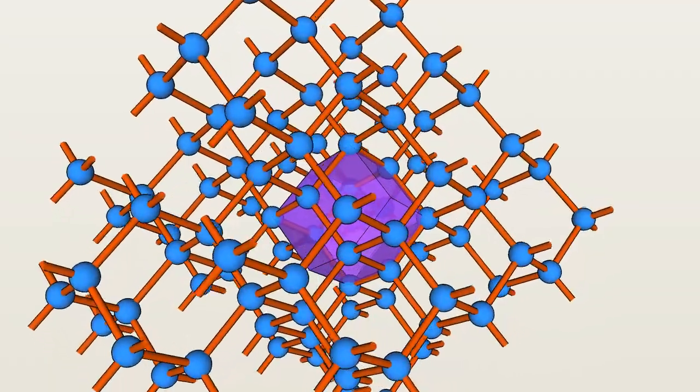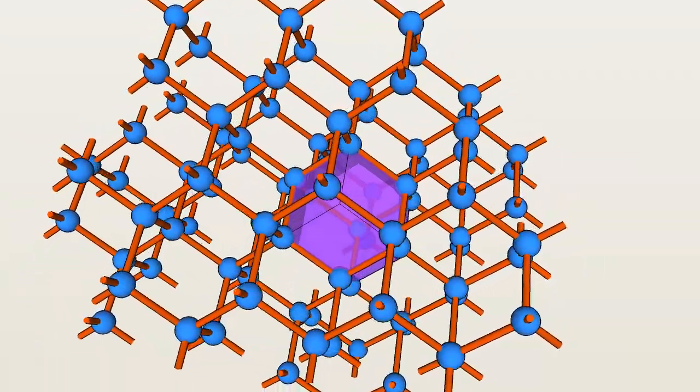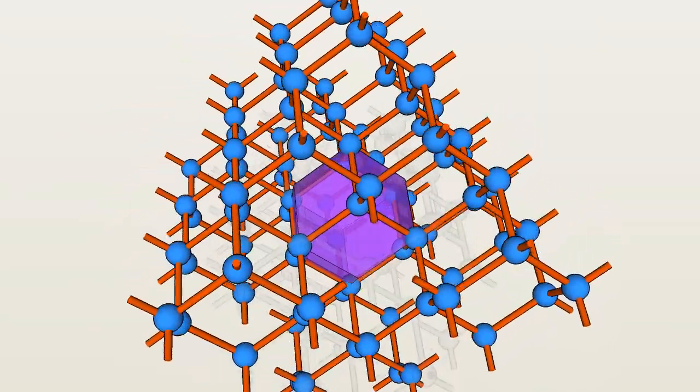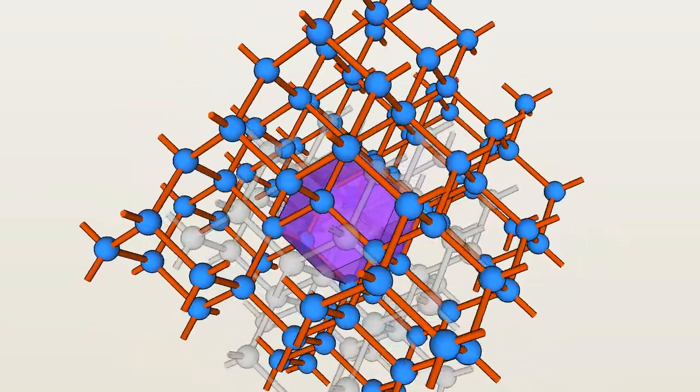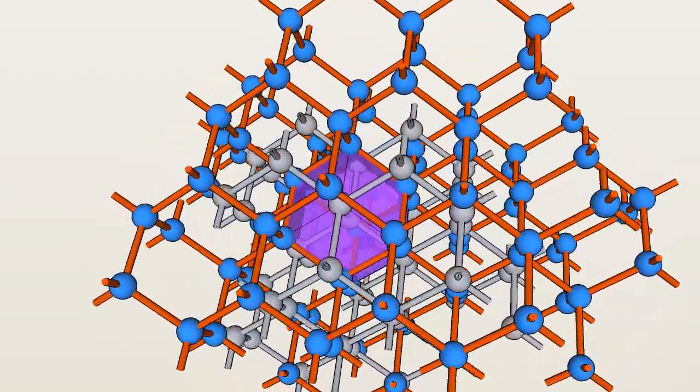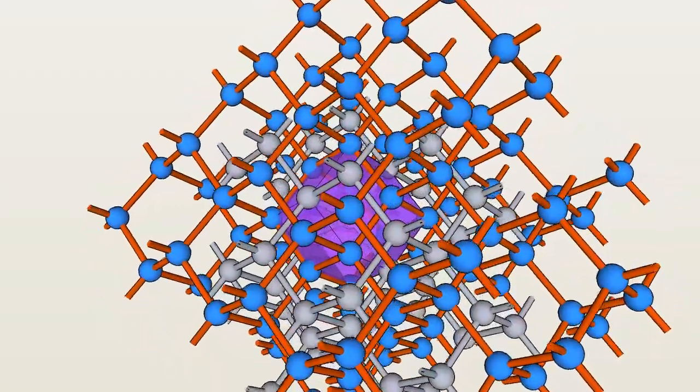Some of the vertices of the rhombic dodecahedron use the empty space between the carbon atoms. There's actually enough room in there for a whole another copy of the diamond framework. This is sometimes known as double diamond. The compound of sodium and thallium has this structure.